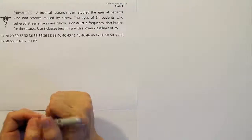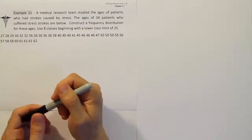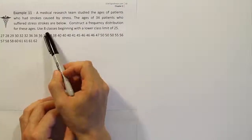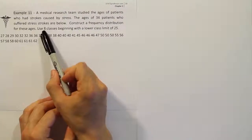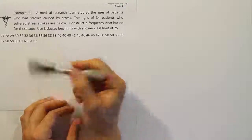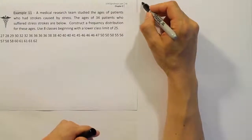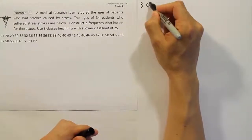The first thing you need to do in this process is always know how many categories or classes you're going to create. The problem tells us we're going to have eight classes.